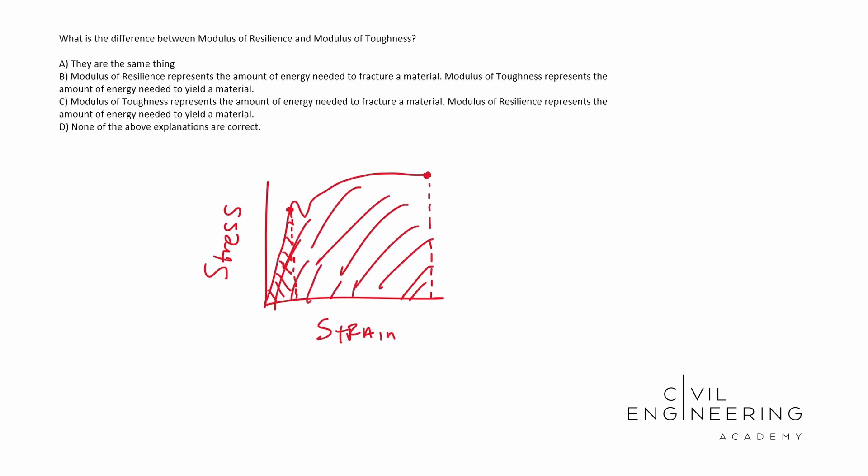So in this case, it looks like C is going to be your answer because the modulus of toughness is the area under the curve of the stress strain diagram at the fracture point. Modulus of resilience is the area under the curve of the stress strain diagram under your yield point.